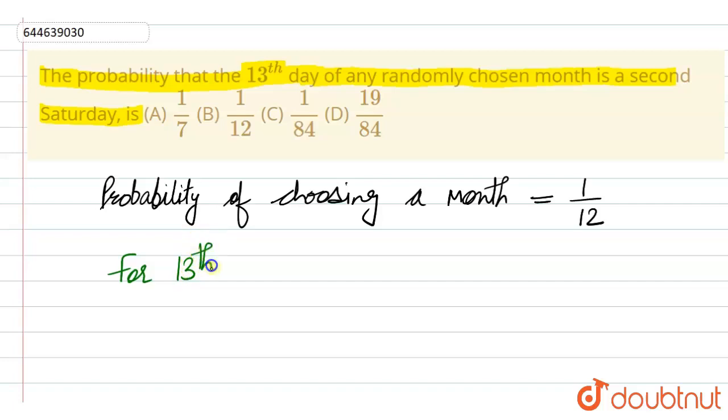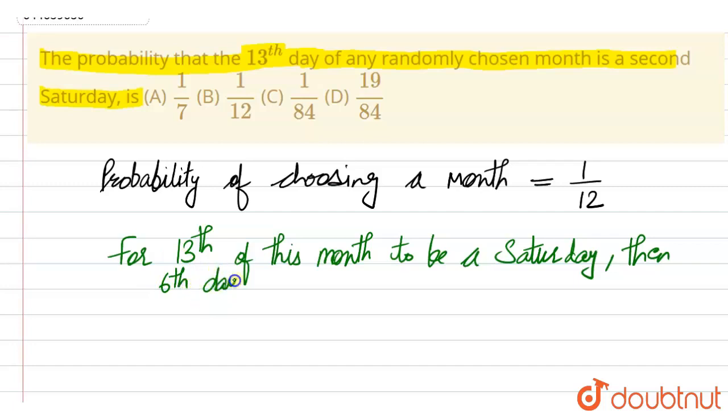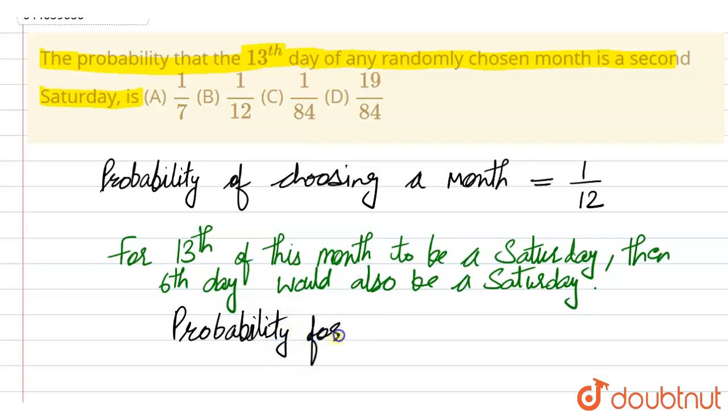For the 13th of this month to be such a day, then the 6th day would also be such a day. If the 13th of this month is a second such day, then the 6th day of the month would be such a day. So probability for the 6th day to be such a day is 1 by 7.